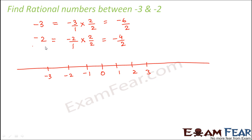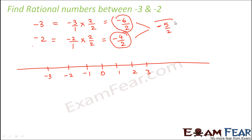Now between -6/2 and -4/2, focusing on the numerators: between -6 and -4 we have -5, so -5/2 exists between -3 and -2. However, by multiplying by 2 we could only find one rational number between -2 and -3.